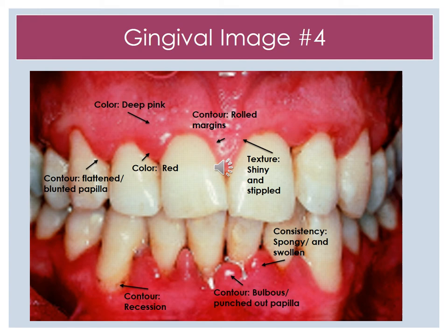In this last gingival image, we continue to see the pink and red coloring for the gingiva, with rolled margins for the contour. Texture is shiny and stippled. The consistency has continued to be spongy and swollen. We have bulbous and punched out papilla, along with localized areas of recession. On the maxillary, we have areas that are flattened and blunted for the papilla.